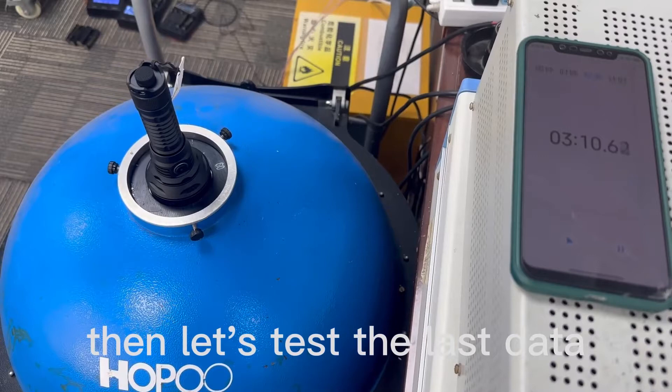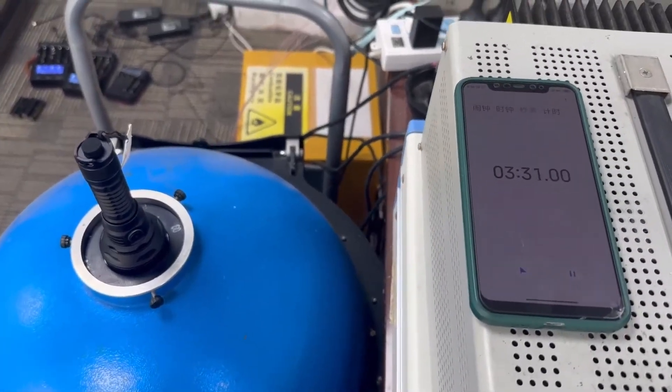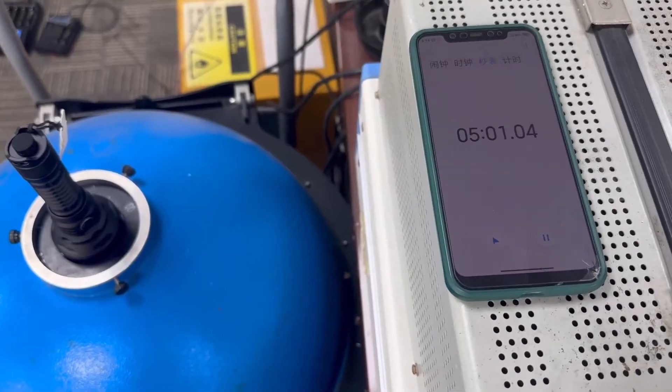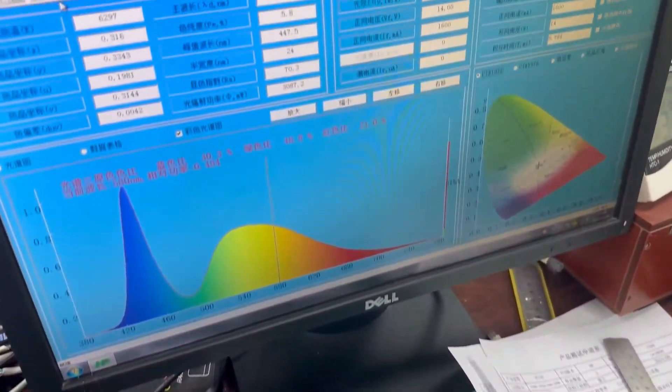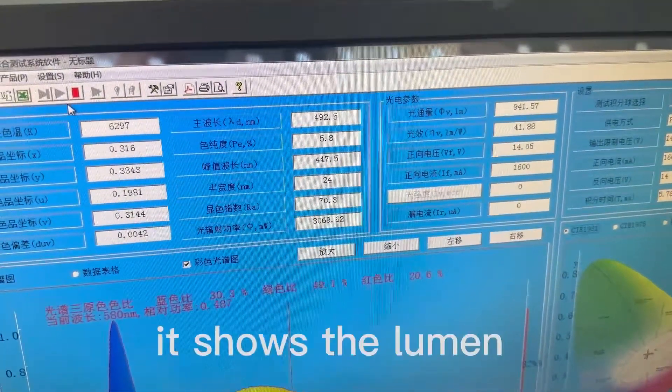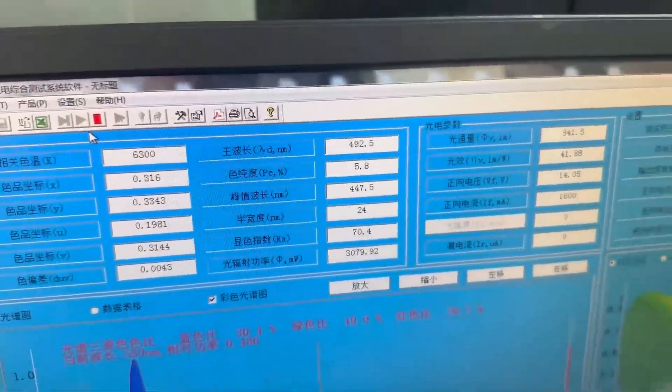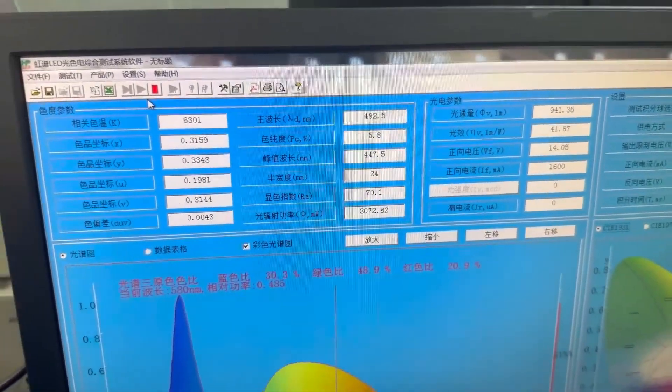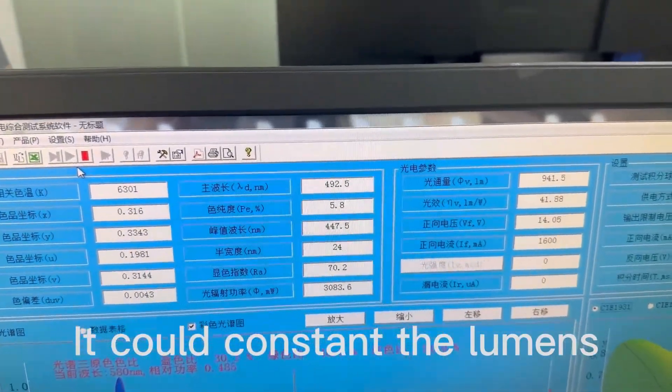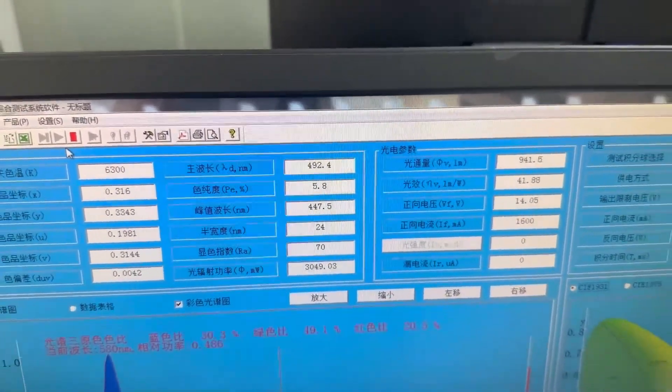Then let's test the last data, 5 minutes. Okay, we can see the last data. It shows the lumens on 941. So we can know it could constant the lumens on 950 to 1000.